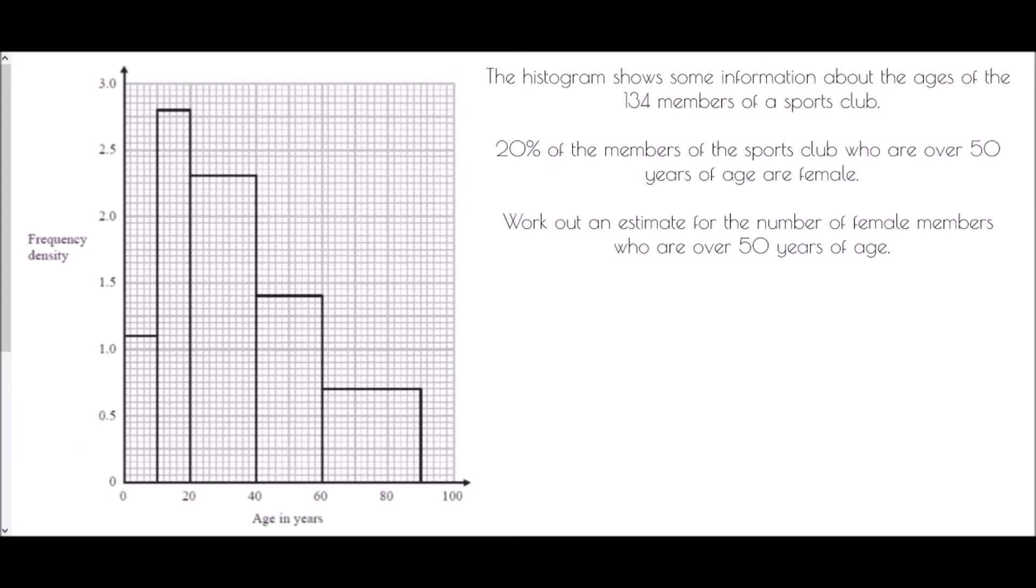So next we're looking at a histogram which is showing some information about the ages of 134 members of a sports club. 20% of the members of the sports club who are over 50 years of age are female. Work out an estimate for the number of female members who are over 50 years of age.